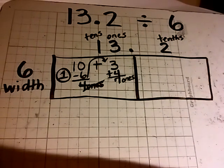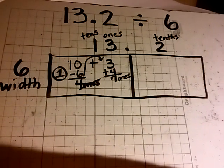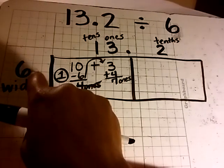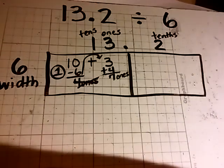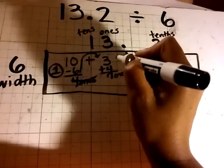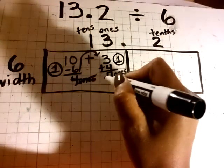So then I ask myself, how many groups of 6 ones are in 7 ones? And the answer again is 1 group of 6.